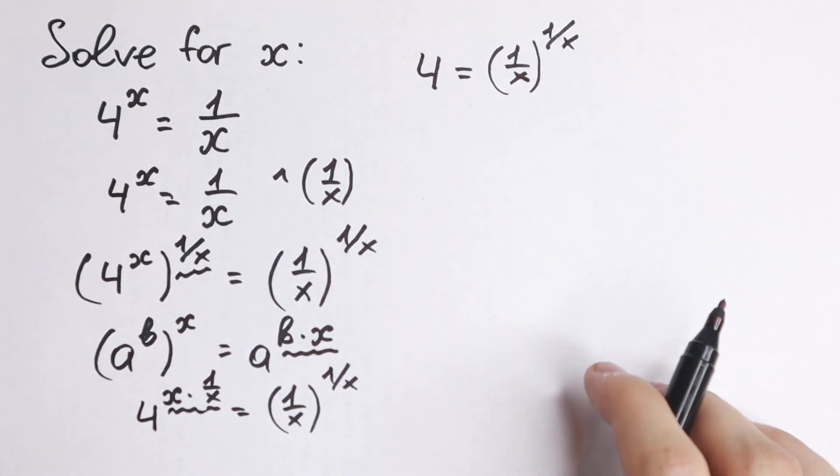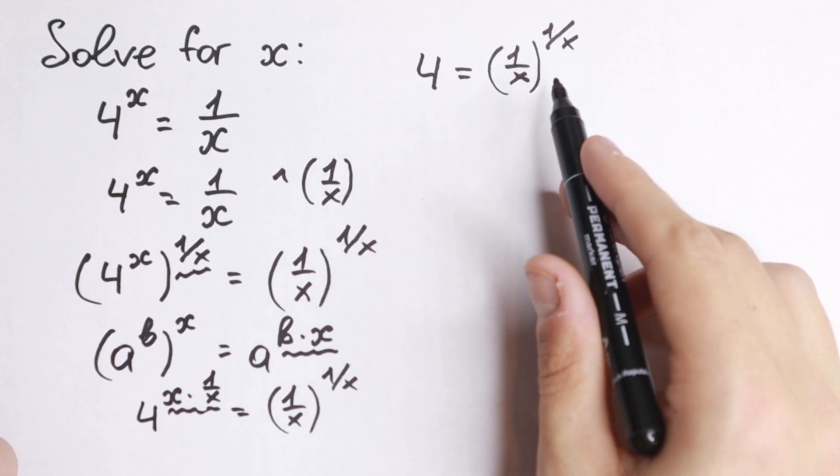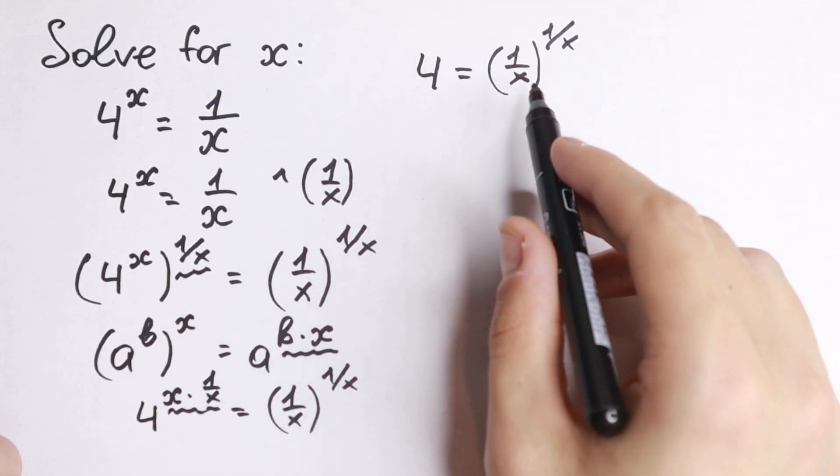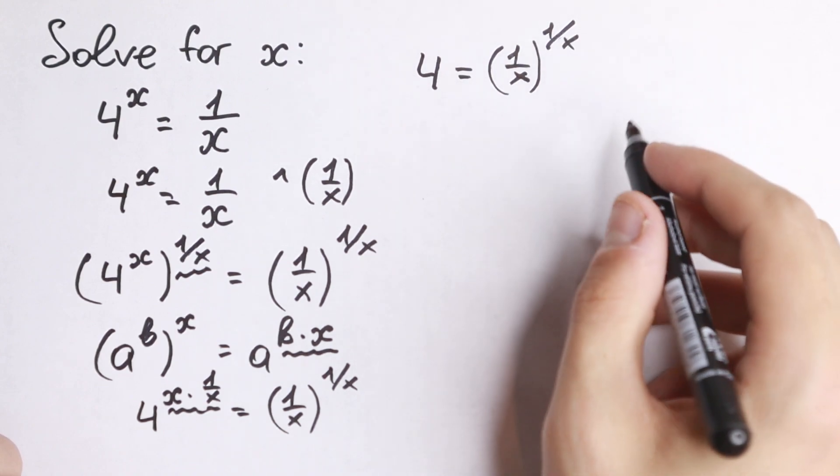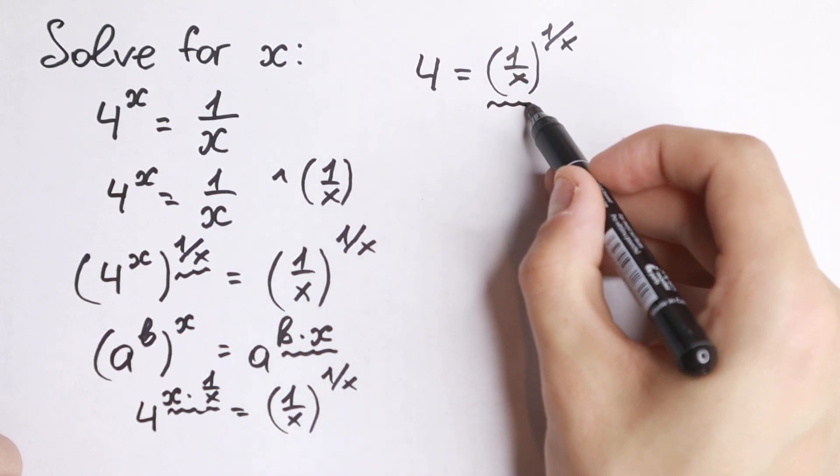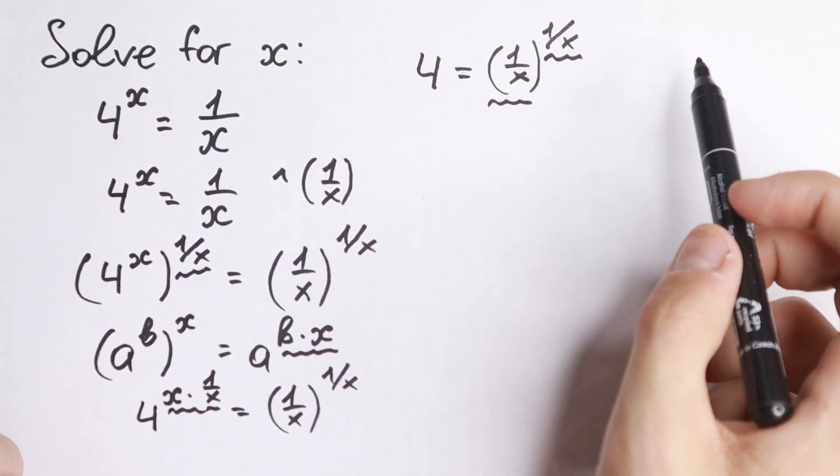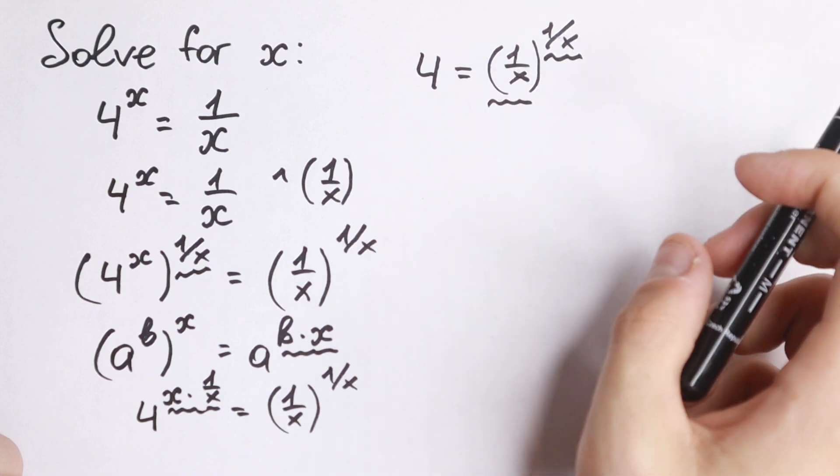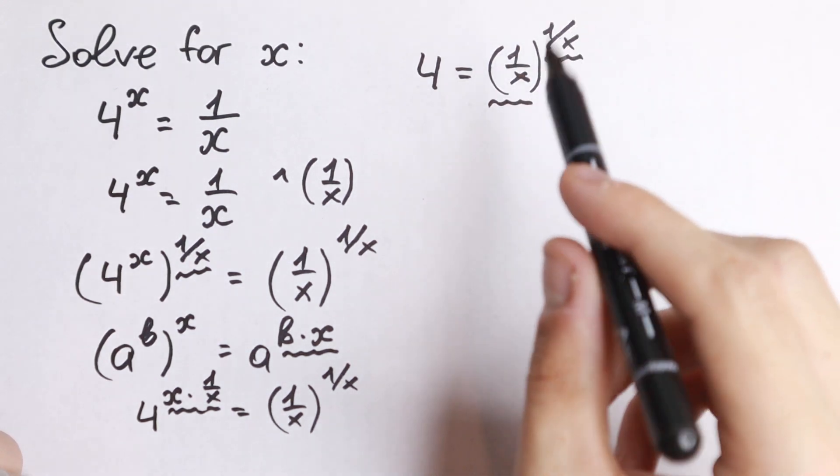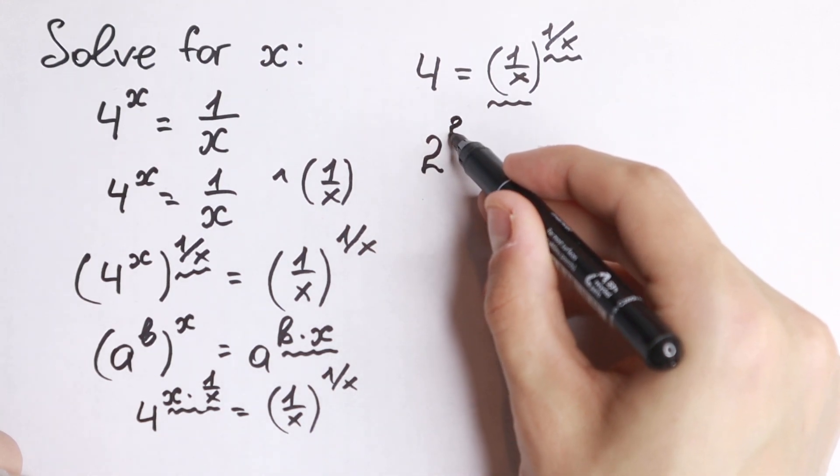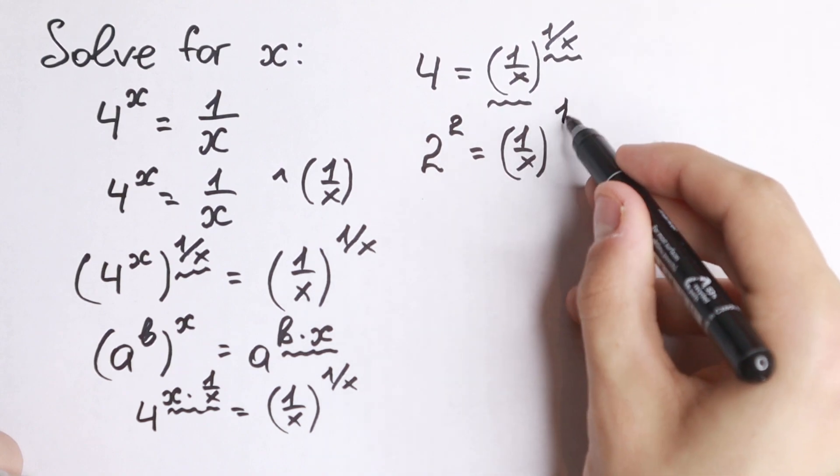OK, what are we going to do next? On the left hand side we have a constant, and on the right hand side we have an exponential function. Moreover this is really good for us, because the base is the same as the exponent. We have 1 over x and 1 over x. So it's not hard to see that we can express 4 as 2 squared. So 2 squared equals 1 over x to the power 1 over x.